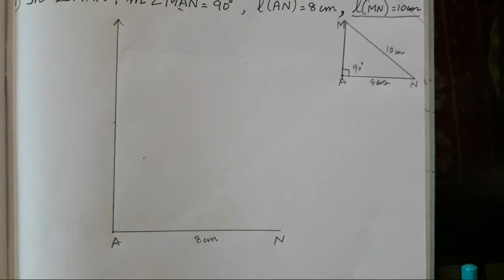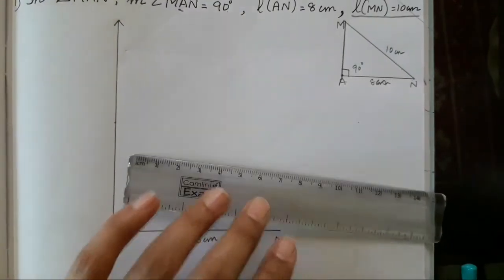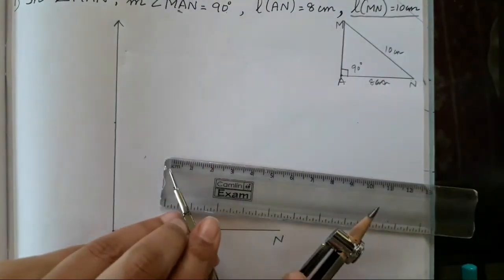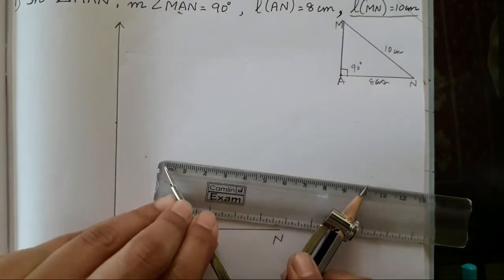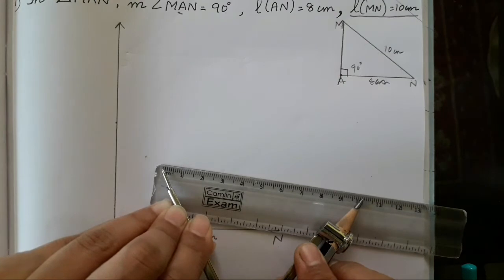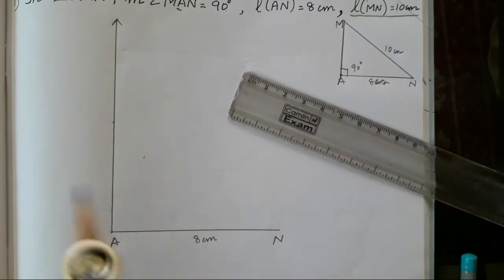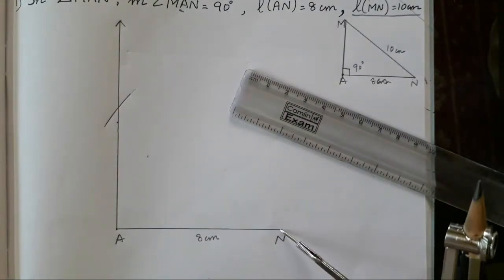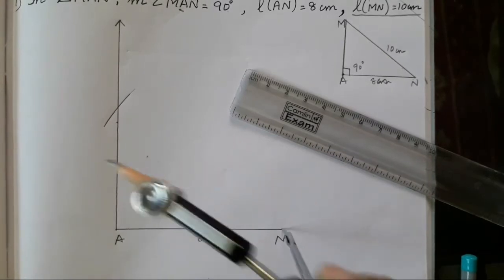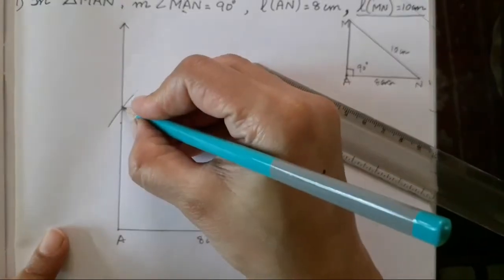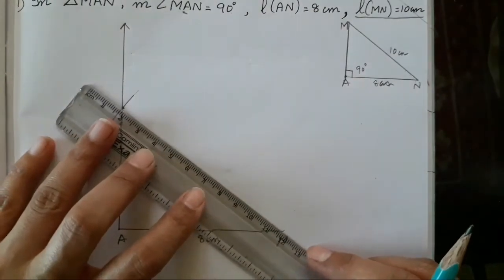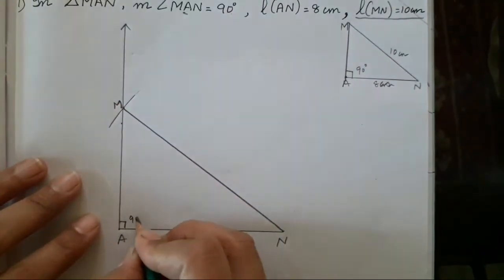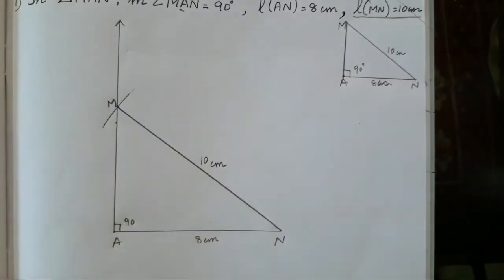Now take 10 cm. Use a scale and your compass. This is 10 cm — in this way you have to take it. Draw a 10 cm arc using this point. Keep your compass at 10 cm and draw an arc. Once you get a point, join it. Now this is your M, 90 degrees, 8 cm already marked, and this is 10 cm.